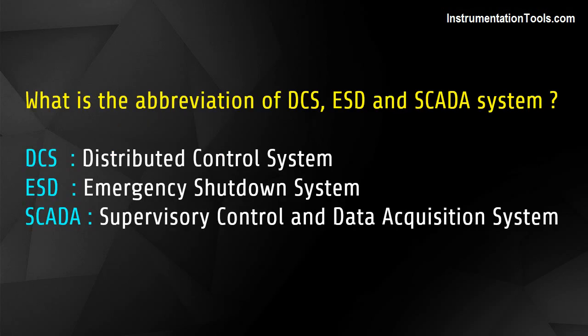What is the abbreviation of DCS, ESD, and SCADA system? DCS – Distributed Control System. ESD – Emergency Shutdown System. SCADA – Supervisory Control and Data Acquisition System.